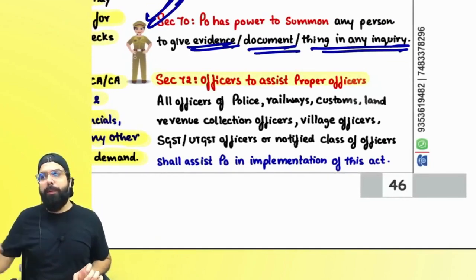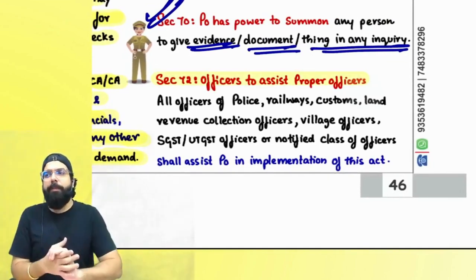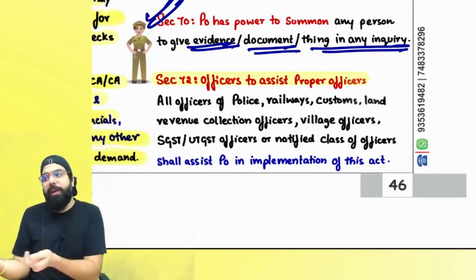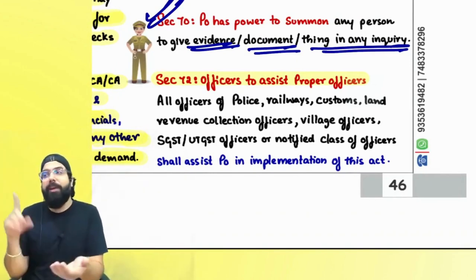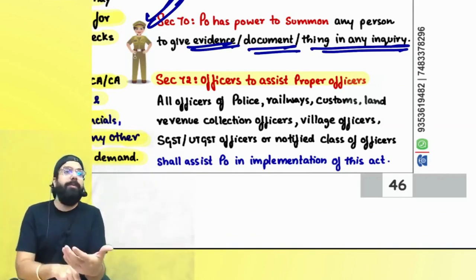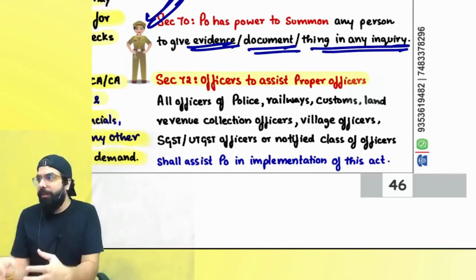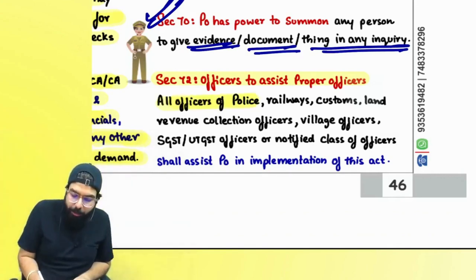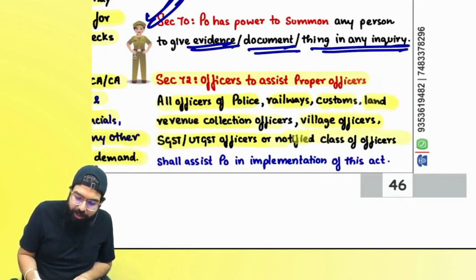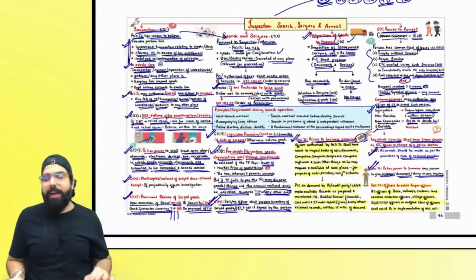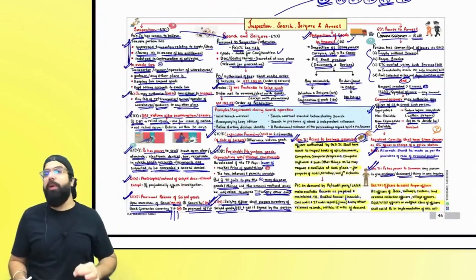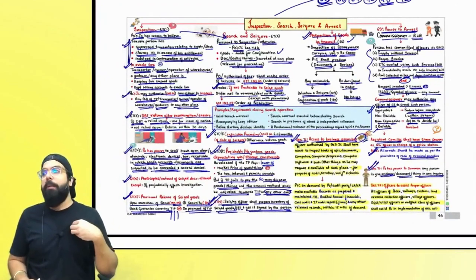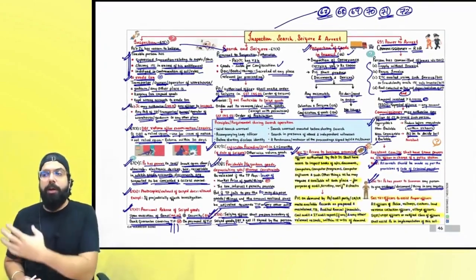Section 72 — officers to assist the proper officer. Whenever a proper officer comes to your premises, say for an inspection, he can get the police department officer. All other department officers — officers of police, railway officers, customs officers, land revenue collection officers, village officers, SGST officers, or notified class of officers — shall assist the proper officer in implementation of this act.